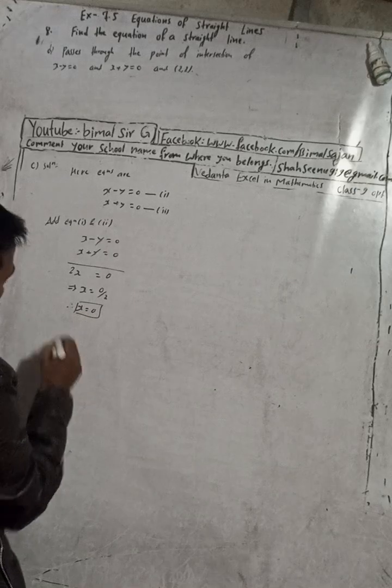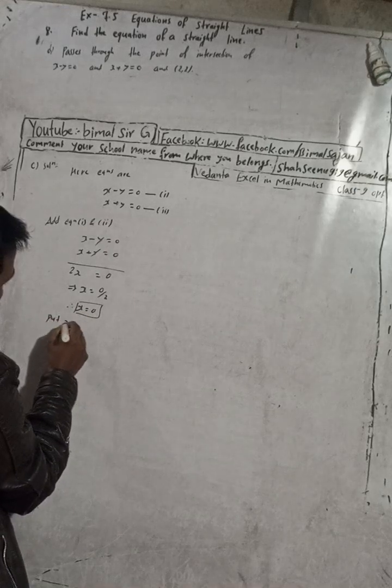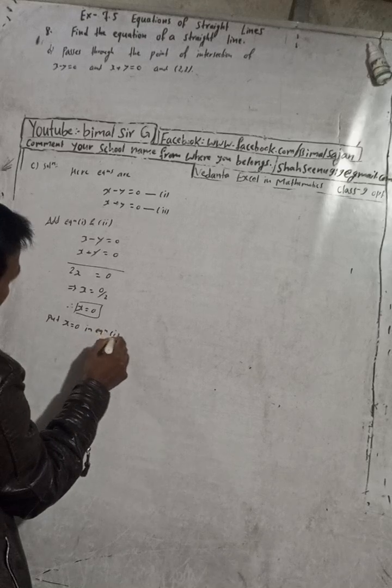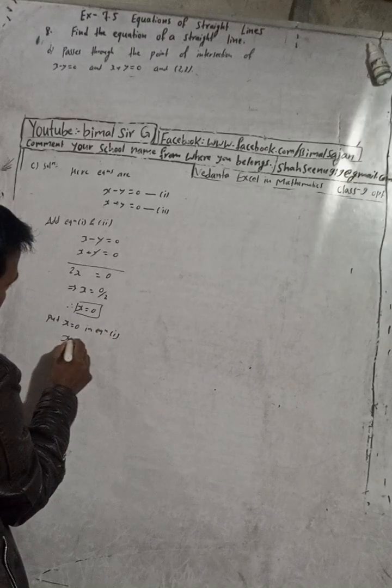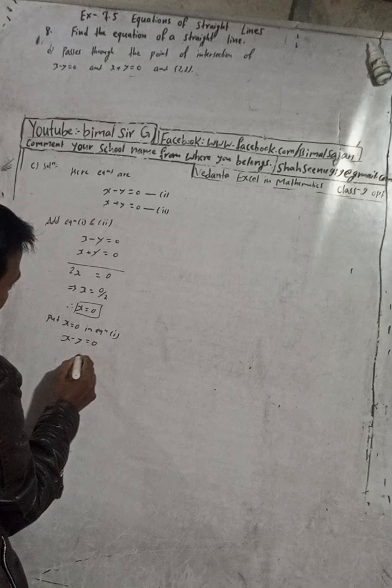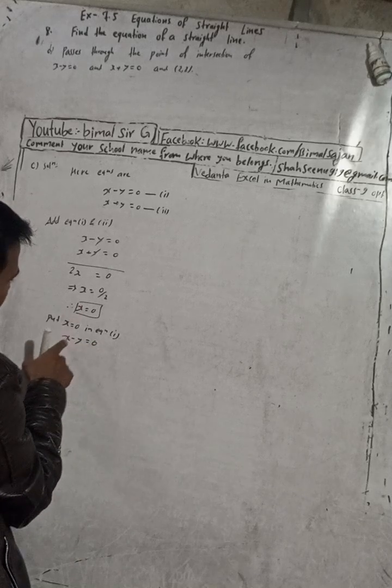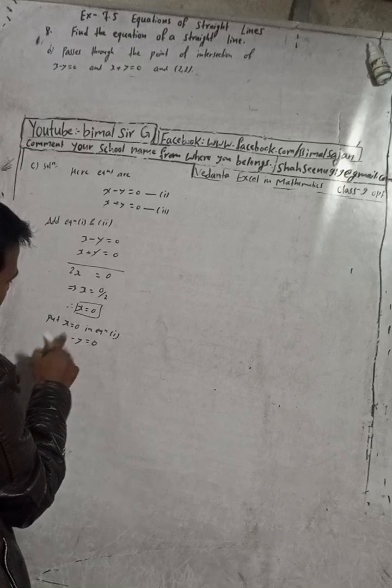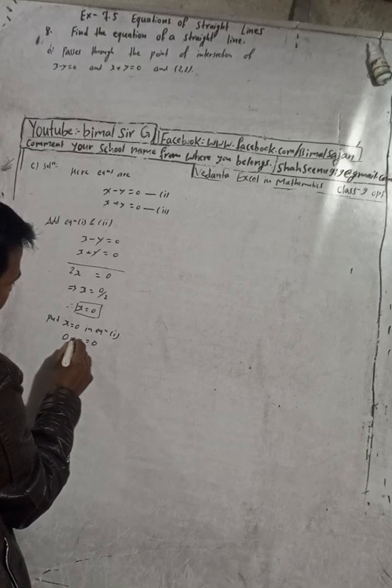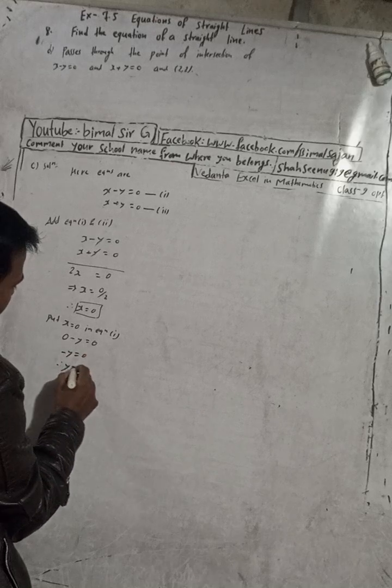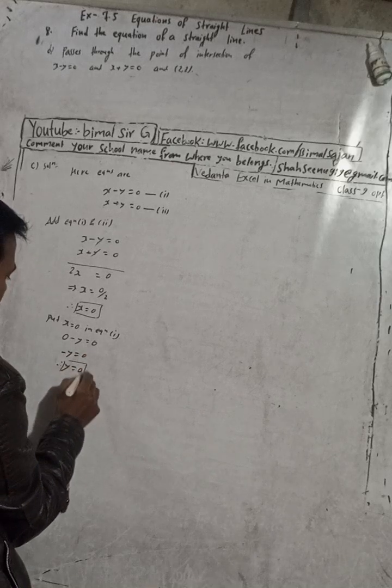Now put x equals 0 in equation 1 or any equation. Here, x minus y equals 0, and then in place of x put 0, so this is 0 here. So 0 minus y, 0 minus y is minus y equals 0, therefore y equals 0.